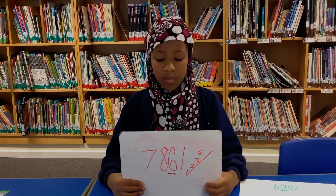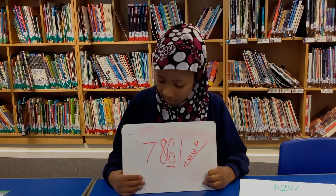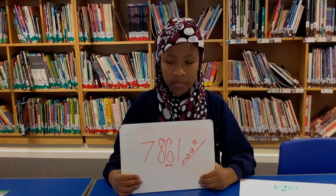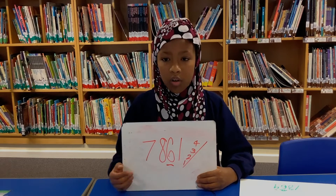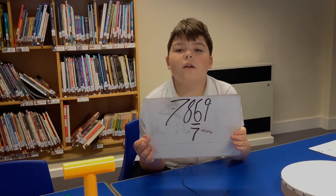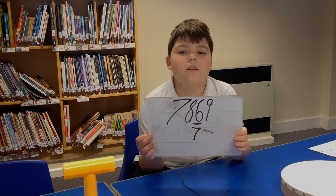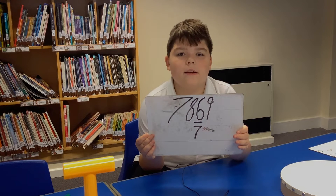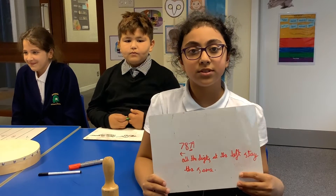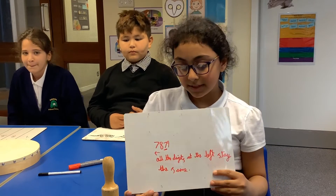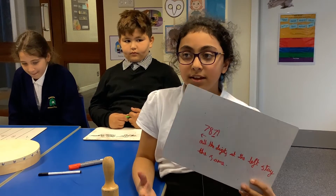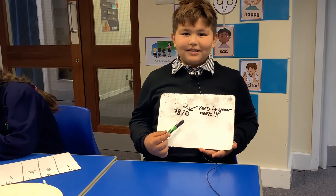Five or greater, add one more. Four or less, let it rest. The meaning of 'four or less' is the number that's next, the ones — if it's lower than four or it's four, then you just leave it the same. So I look at the ones and I see that it is a nine, so I round up to the nearest ten and the ten is a seven now.